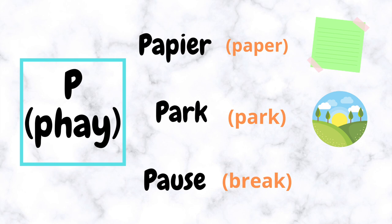P (Pe) — for example: Papier, Park, Pause.